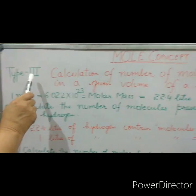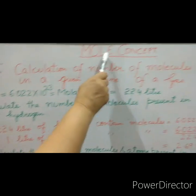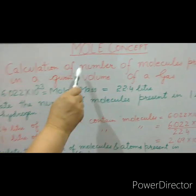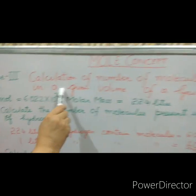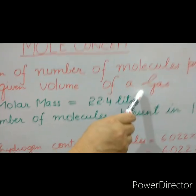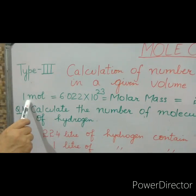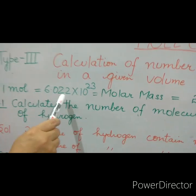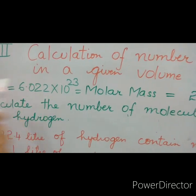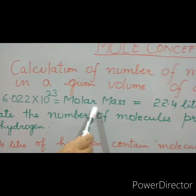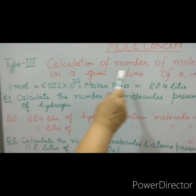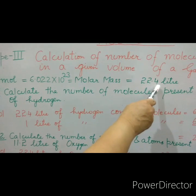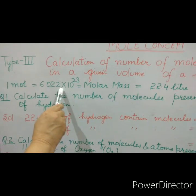Let's discuss type 3 under mole concept: calculation of number of molecules present in a given volume of a gas. Reminder: 1 mole is equal to Avogadro number, 1 mole is also equal to molar mass, and 1 mole is also equal to 22.4 liters. In these questions, there will be a relation between volume and number.